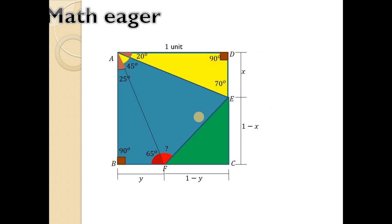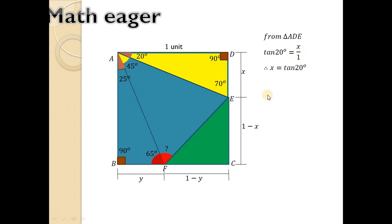From triangle ADE, tan(20°) equals X upon 1. Why? Because tan θ equals P upon B. Here P is DE, which is X, and B is DA, which is 1. So we get X equals tan(20°). Replace X by tan(20°).